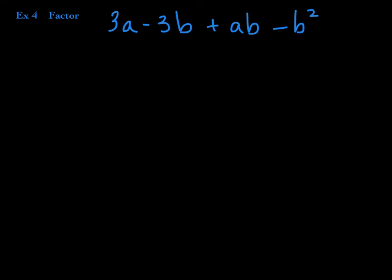Now we're going to transition to factoring by grouping. Before we factor by grouping, the first step of any factoring problem should always be factoring out the GCF. For this polynomial — it's called a polynomial because it has four terms — does everybody have a 3? No. Does everybody have an A? No. Does everybody have a B? No. So the GCF is 1, and you won't see us factor it out.